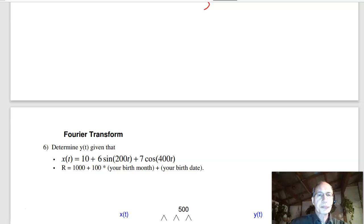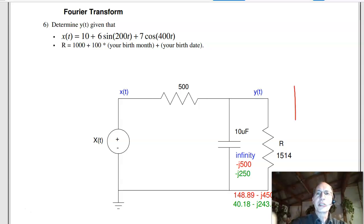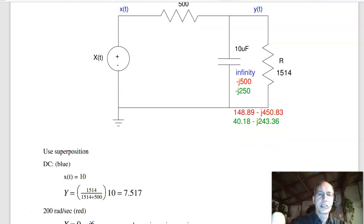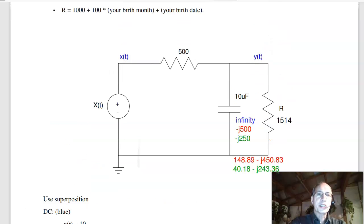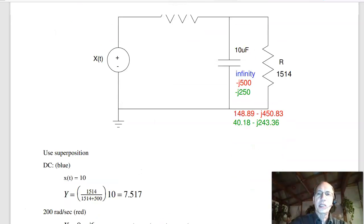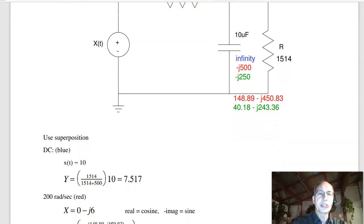The last problem. Is given the Fourier transform, find y of t given X of t. This is a superposition problem. Treat it like three separate problems. First, at DC. So at DC, the input is just 10. That's this term right here. There's the DC term. The resistor is 1514. That depends upon your birth date. 500. By voltage division is what you're measuring, divided by the total times 10, 7.5 volts. That's the output at DC.